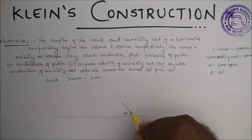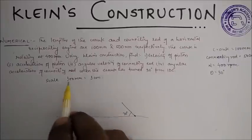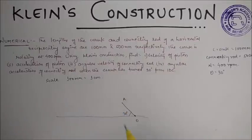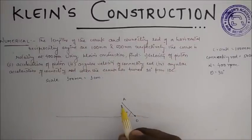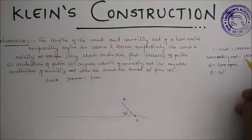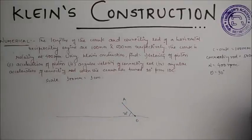This is crank, so 100 mm is the length given, so 100 mm is 1 centimeter, so this will be of 1 centimeter length O-A. Let it be. Then draw a connecting rod. Connecting rod will be length 500 mm, so 100 mm is 1 centimeter, so 500 mm is 5 centimeters. So from here cut